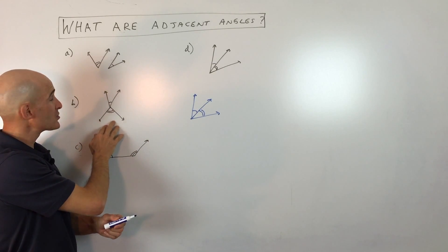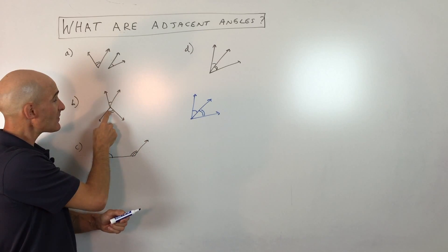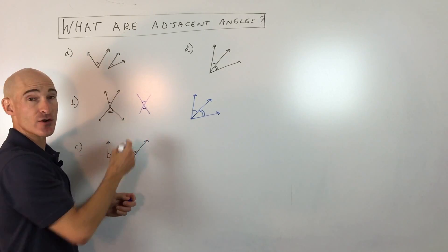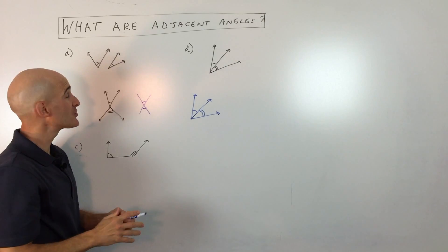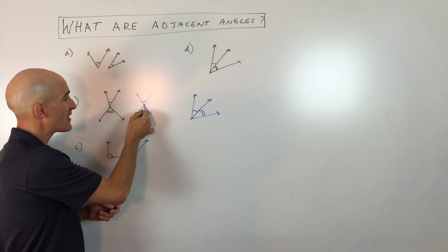Letter B, we're getting closer. The two angles share that vertex or that hinge, right? But they're still not adjacent. Sometimes people will confuse vertical angles, like when you have two straight lines, the angles that are across from each other with adjacent angles. These angles are congruent, but they're not adjacent. They just share that vertex.